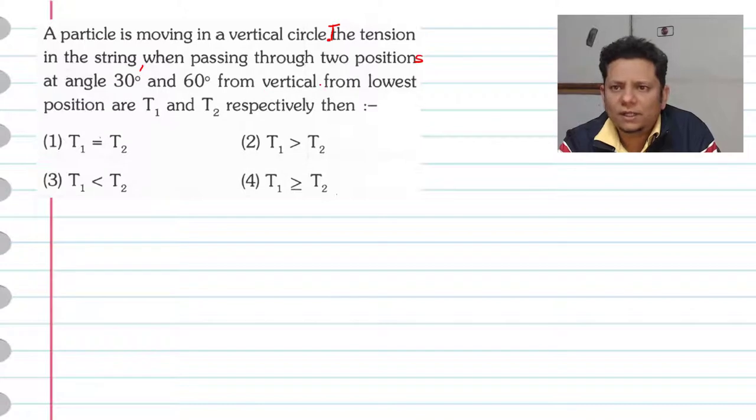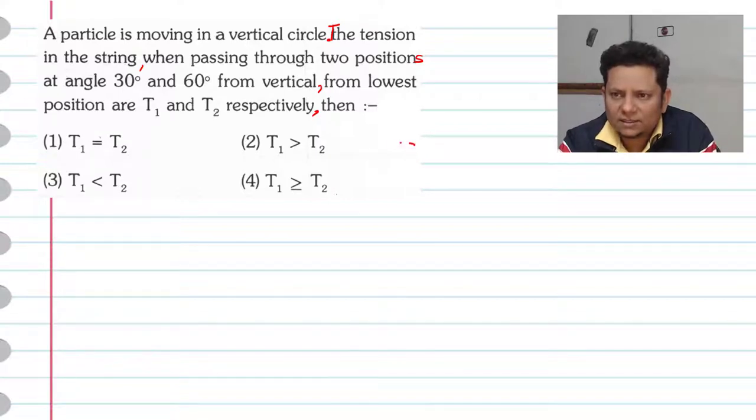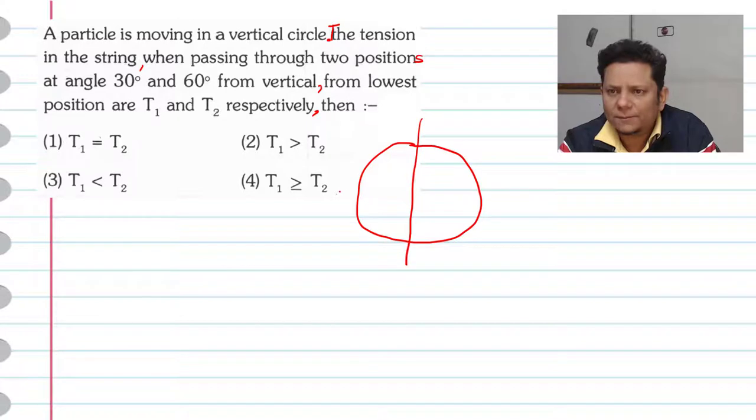and 60° from vertical, from lowest position, are T₁ and T₂ respectively. Then: option 1, T₁ = T₂; option 2, T₁ > T₂; option 3, T₁ < T₂; option 4, T₁ ≥ T₂. Now consider this to be a vertical circle motion.